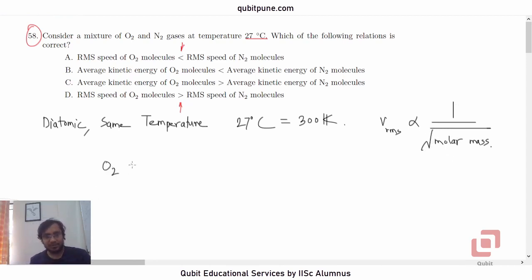What is the molar mass of oxygen? 32 grams. What is the molar mass of nitrogen? 28 grams.